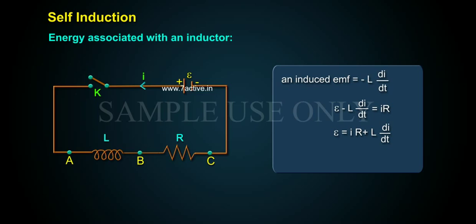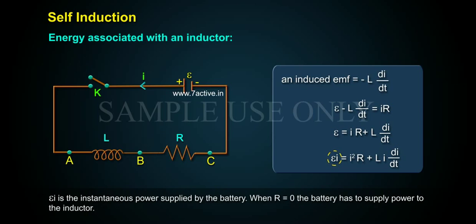Multiply both sides by I. We get epsilon I equals I squared R plus LI DI by DT. Epsilon I is the instantaneous power supplied by the battery.